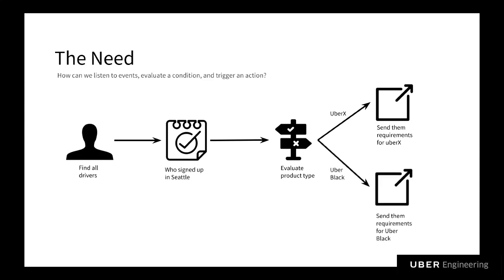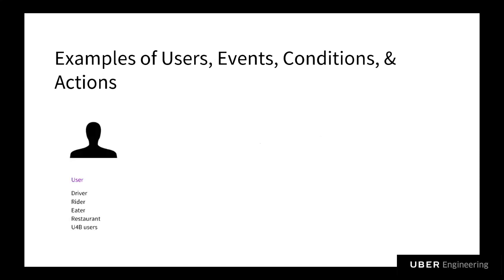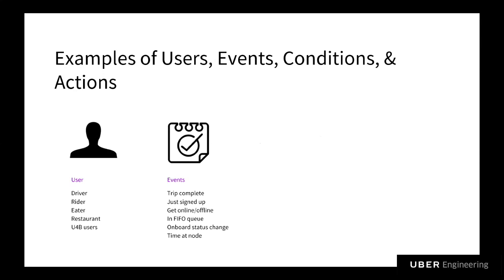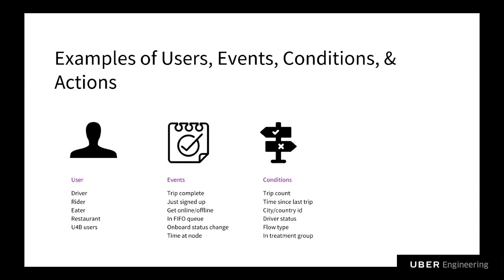The main components in this problem are users, events, conditions, and actions. A user could be a rider, driver, or restaurant. An event could be trip complete, in a FIFO queue, or the time of day. Conditions could evaluate your trip count, what city you live in, or whether you're in a particular treatment group. And actions could be sending comms to a user, tagging a user's account, or even changing a driver's status.